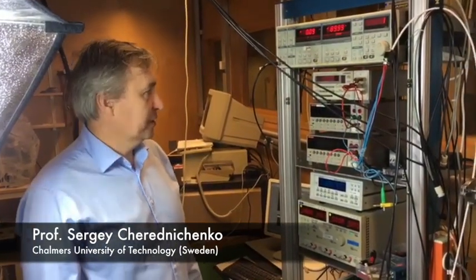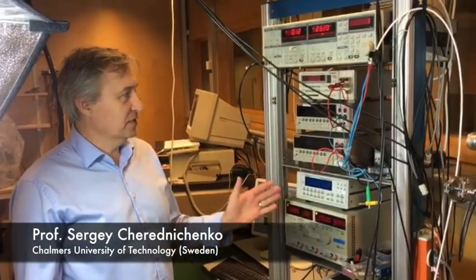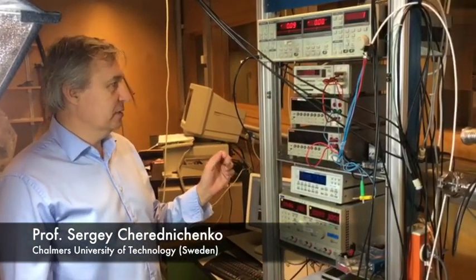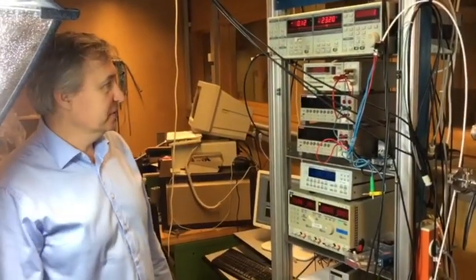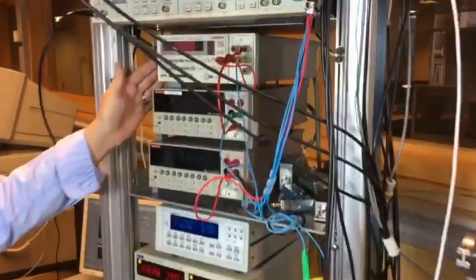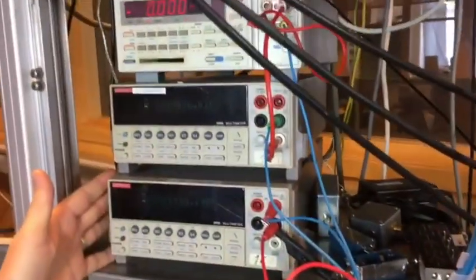The graphene mixer is electrically biased, meaning we send a DC current through it at a level of just a few microamps. For this, we use a DC current source, a current meter, and a voltage meter.